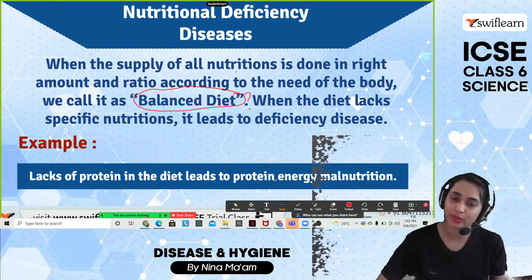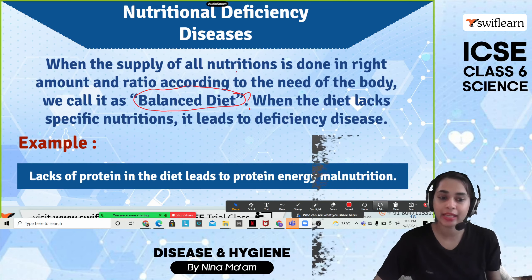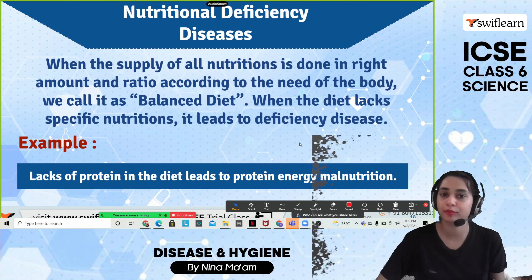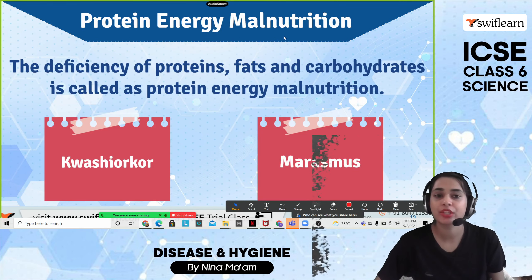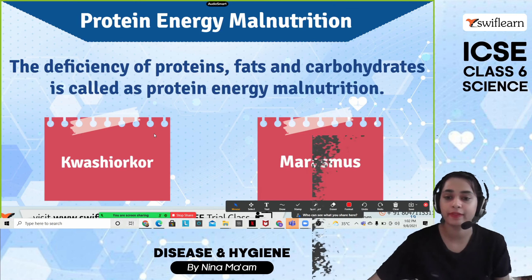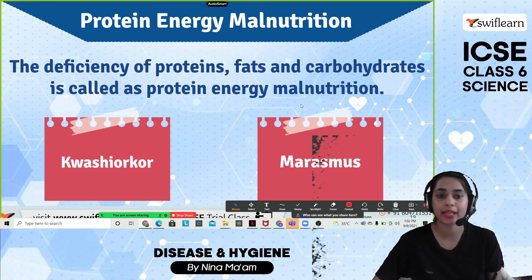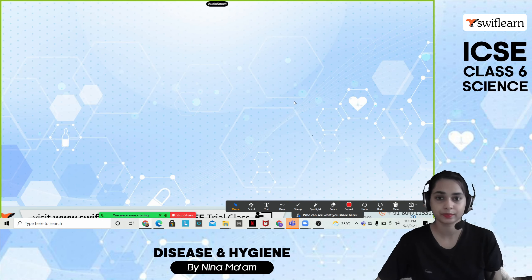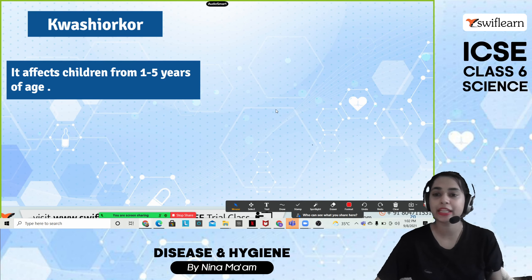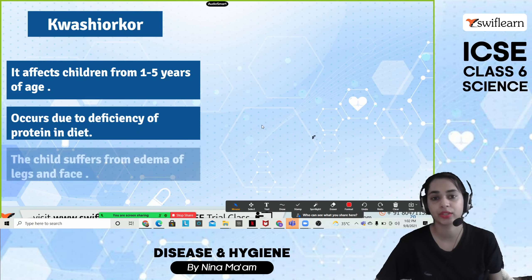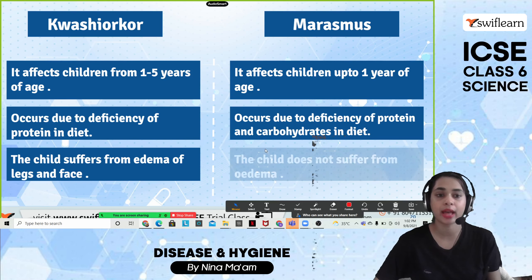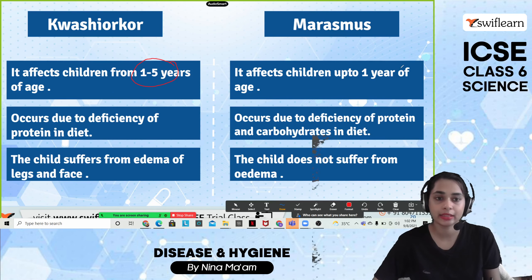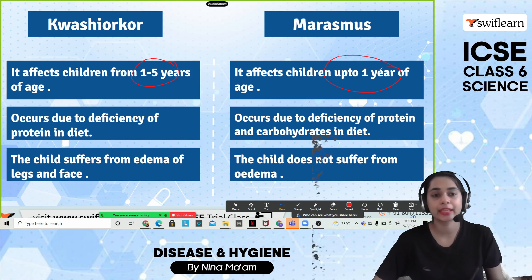Protein energy malnutrition has two examples: kwashiorkor and marasmus. Kwashiorkor affects children from one to five years of age, while marasmus affects children up to one year of age. Kwashiorkor occurs due to deficiency of protein in the diet, while marasmus occurs due to deficiency of both protein and carbohydrates.